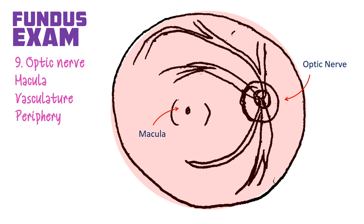Last, but definitely not least, use your condensing lens. I personally prefer the 90D to examine the vitreous and posterior pole. There's your slit lamp examination done.